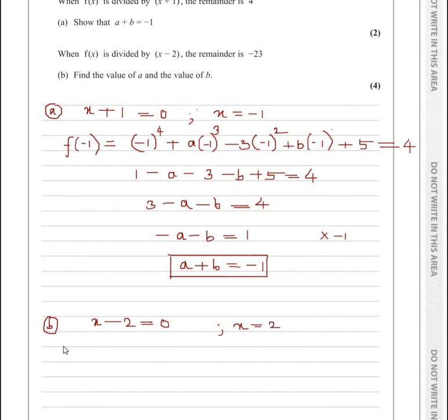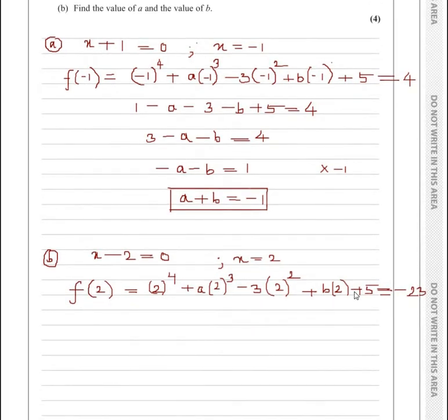The meaning stands the same. Whenever I substitute 2 in the given equation, 2^4 + a(2)^3 - 3(2)^2 + b(2) + 5, I should get a remainder as -23. So let us start solving this equation. 2^4 is 16, 2^3 is 8, so it becomes 8a. 2^2 is 4, 4 × 3 gives you 12.